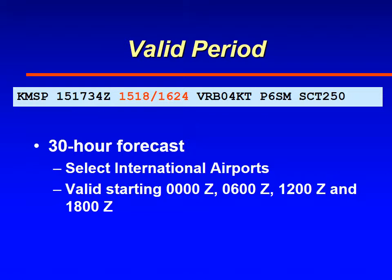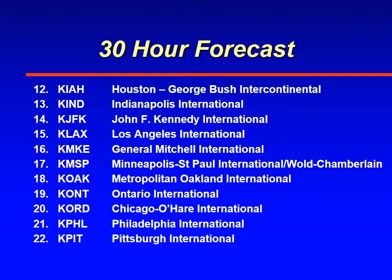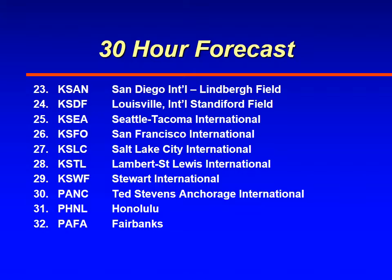However, there are some airports — select international airports — that need extended TAFs for long-range flights. Their forecasts still start at 06, 12, and 18 Zulu but run about six more hours than your standard 24-hour TAF, making them 30-hour TAFs. Here are the locations — as you can see these are large airports that typically have international air traffic. There are 32 airports that have 30-hour TAFs.